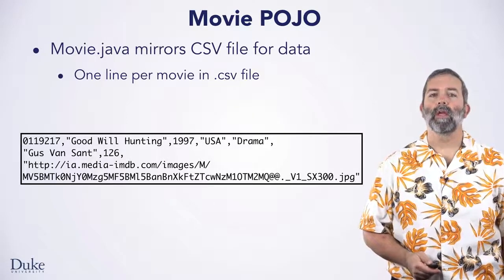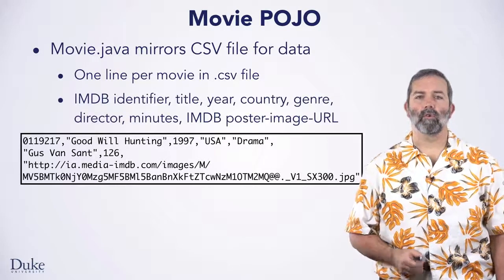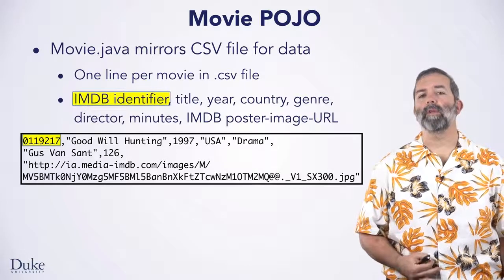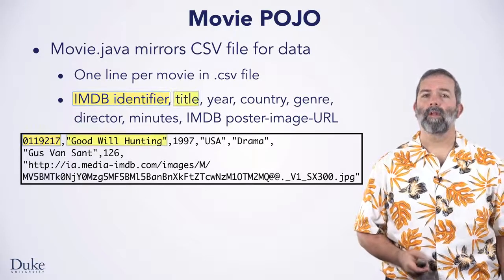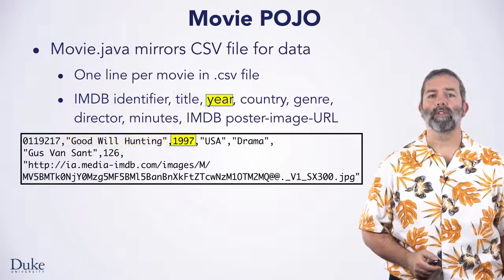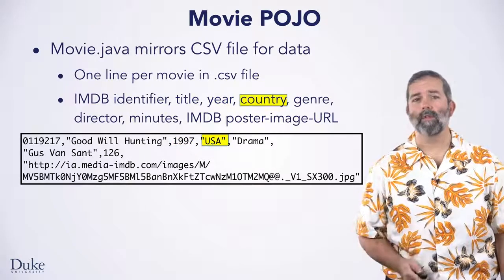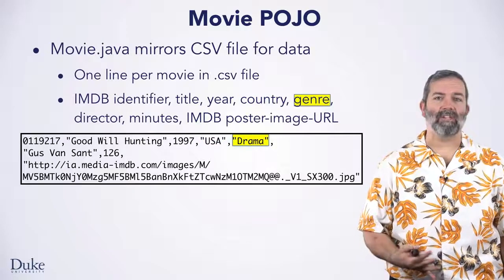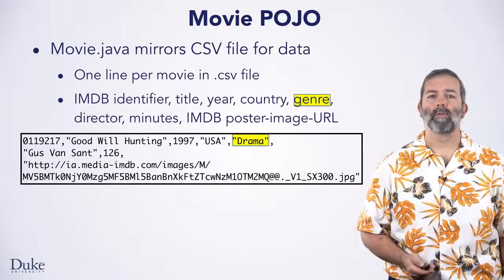That CSV file contains one line of comma separated value data for each movie. Each line of the CSV file stores eight items of information about each movie. The first item is an IMDB, or Internet Movie Database, ID number for the movie. The title of the movie is the next item, followed by the year in which the movie was made, and the country in which the movie was made — though sometimes there is more than one country. Then the genre of the movie, such as comedy, action, adventure, horror, or more. There can also be more than one genre listed with the movie.